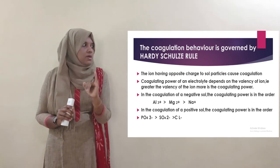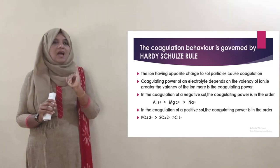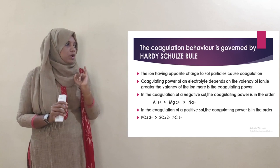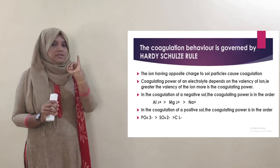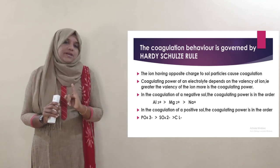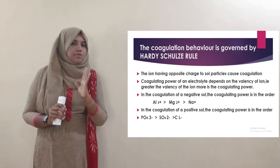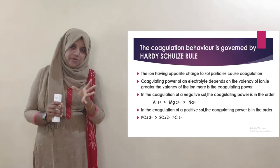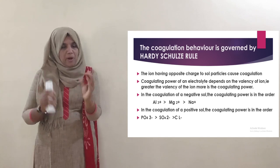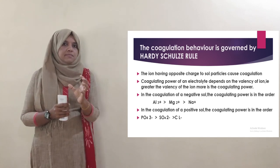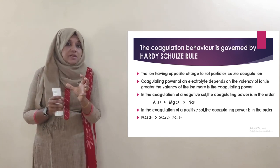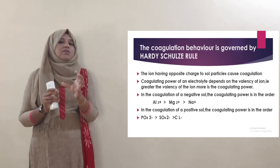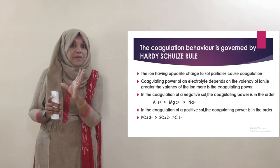First point: the ion having opposite charge to the sol particle causes coagulation. Second point: the coagulating power of an electrolyte depends on the valence of the ion carrying the charge.